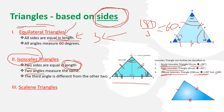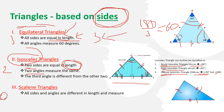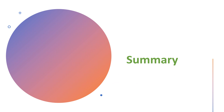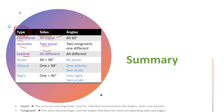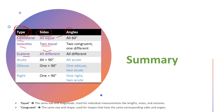Now let's get into the third type. In equilateral, all three sides are equal. In isosceles, two sides are equal. In a scalene triangle, none of the sides are equal — all three sides are of different length.